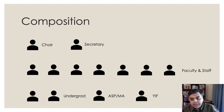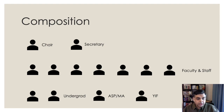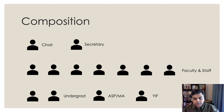The CADI is a committee that comprises a total of 13 members. Of these, nine members are drawn from the faculty and senior staff of the University — this includes both the Chair and the Secretary. In addition, we have four student members: two from the incoming third-year undergraduate batch, one from the Ashoka Scholars Program or the Master's programs, and one student is a Young India Fellow. That's the composition of the committee.